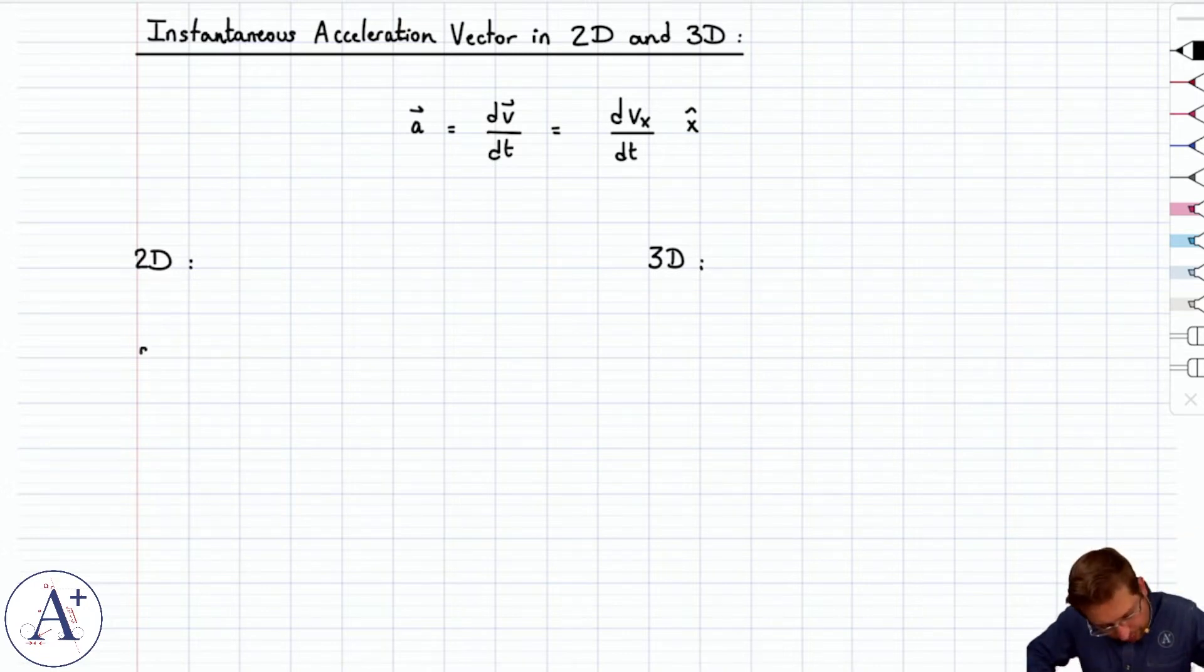Of course, at this point, we know exactly what the generalization is going to look like. It's going to be dvx/dt carried by x hat, plus dvy/dt carried by y hat,